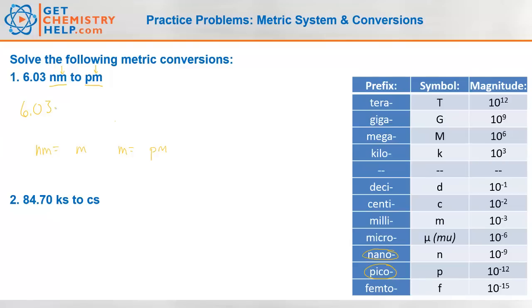So 6.03 nanometers. What's the conversion between nanometers and meters? What does nano mean? If we look over here, nano means 10 to the negative 9th. So a nanometer must be 10 to the negative 9th meters.